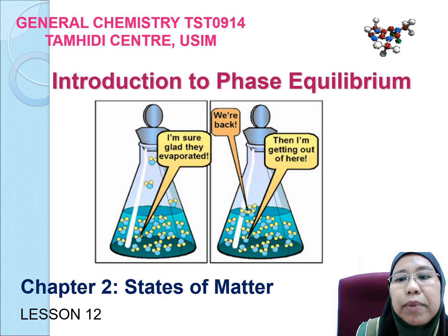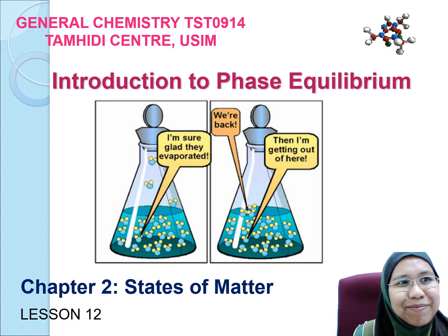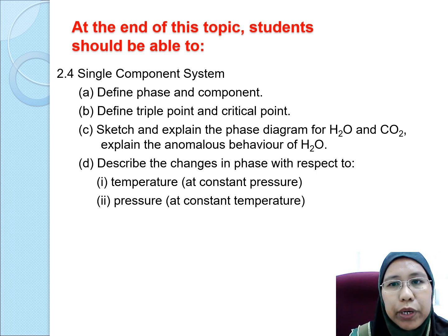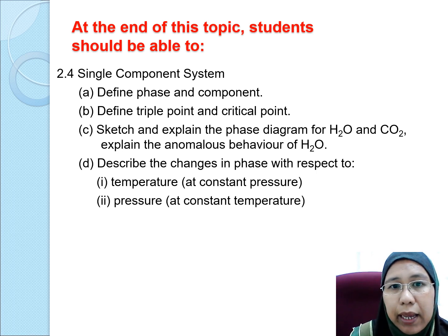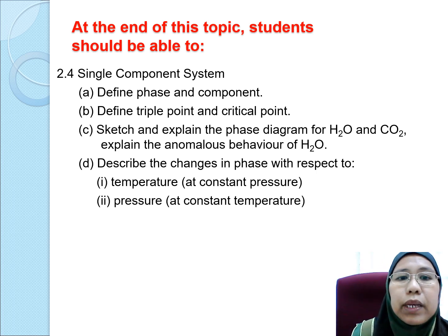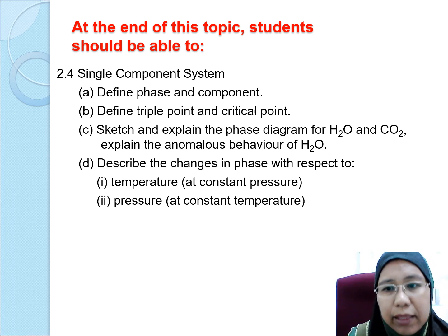We are going to learn about single component system and we are going to be introduced to phase equilibrium. Firstly, we are going to define phase and component, and we also have to define triple point and critical point in the phase diagram. We need to be able to sketch and explain the phase diagram for water and carbon dioxide and how they are anomalous compared to other normal elements. We need to be able to describe the changes in phase with respect to temperature and pressure.